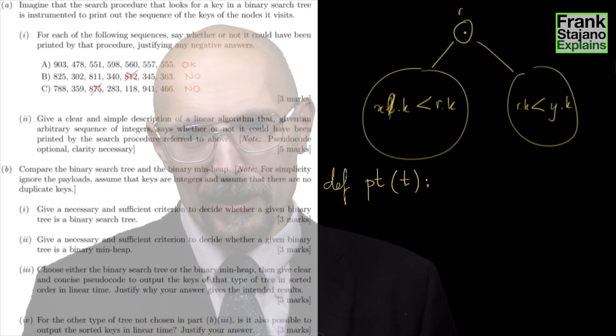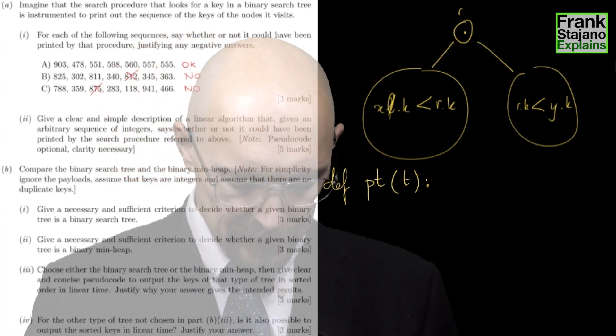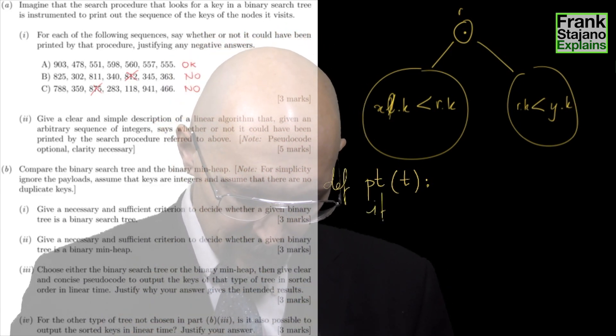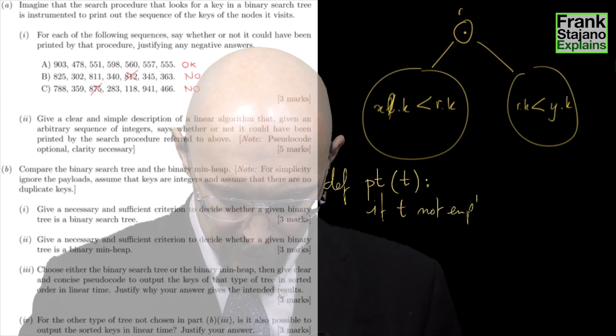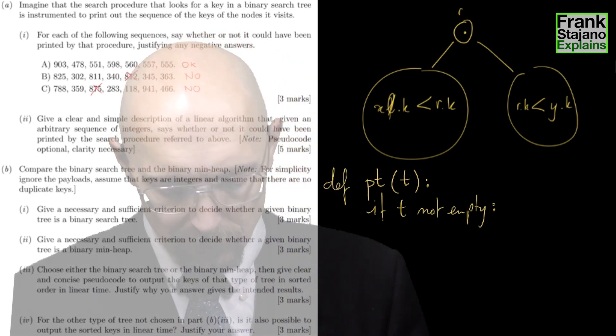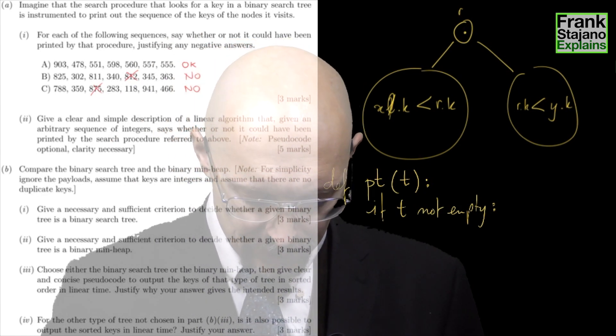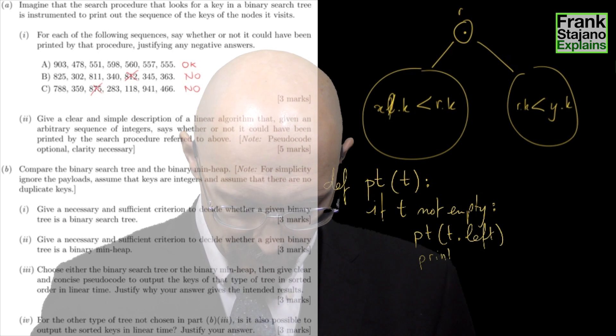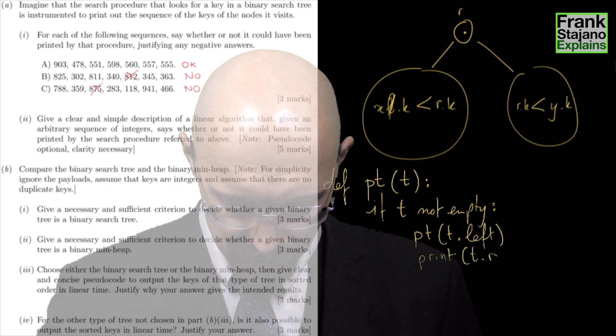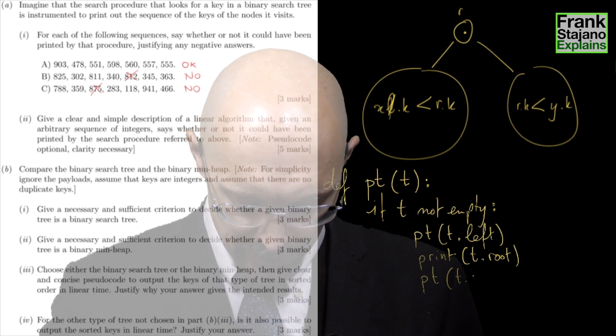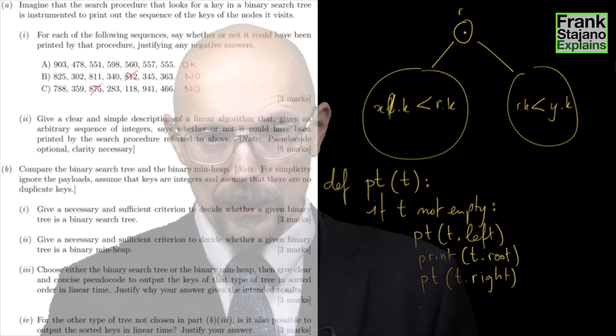So if I have a procedure for printing a tree called pt for print a tree, a tree called t, the base of the recursion is that if the tree is empty, then I've already printed everything there is to print, which is nothing. So I'll say if the tree is not empty, then do this, otherwise just don't do anything. And if the tree is not empty, what do I do? I simply print tree recursively for the left subtree, print tree at t.left. Then I print the root itself. And then I print the tree that is the right subtree.